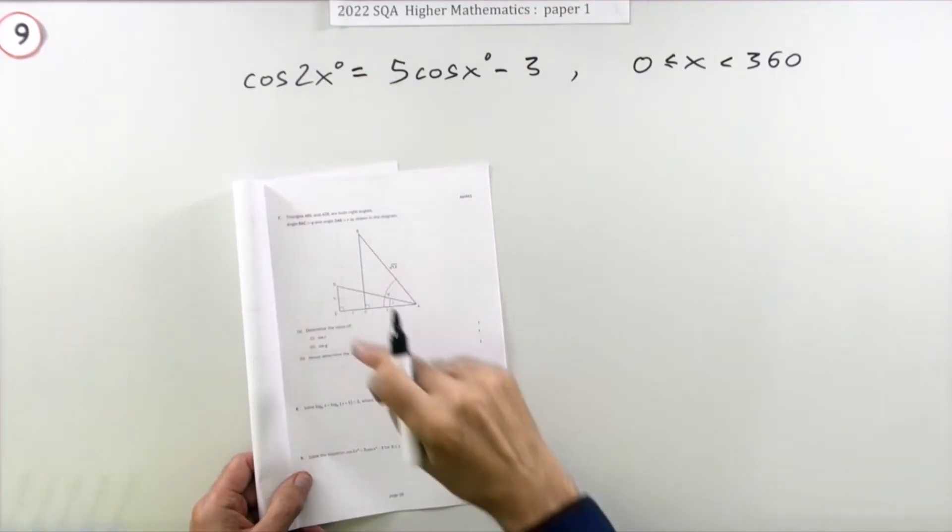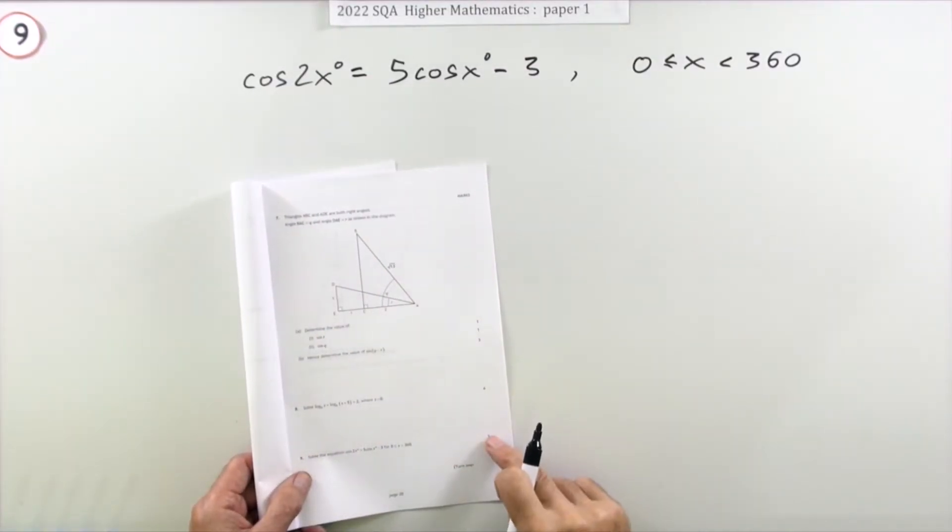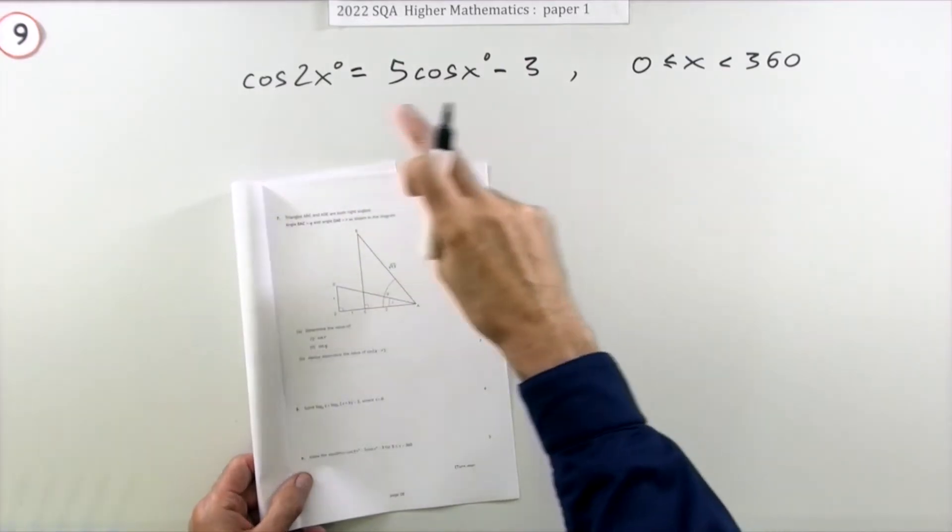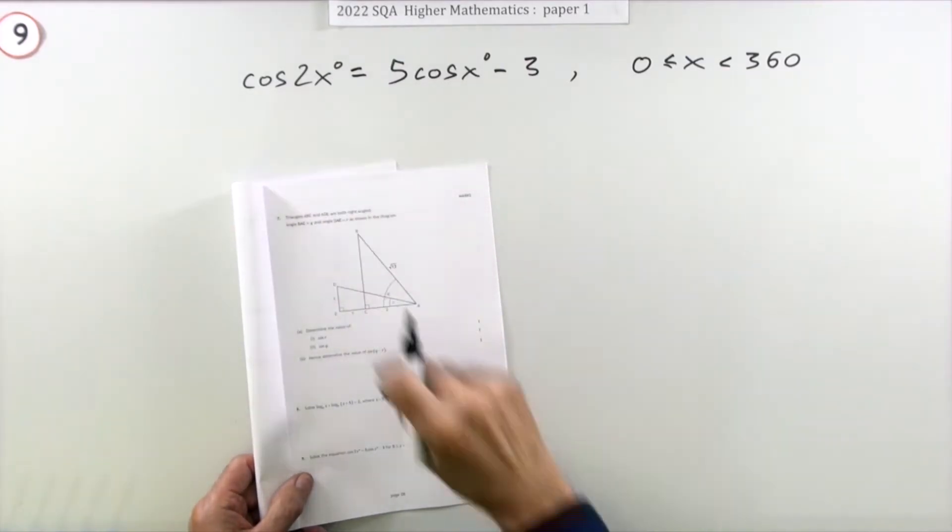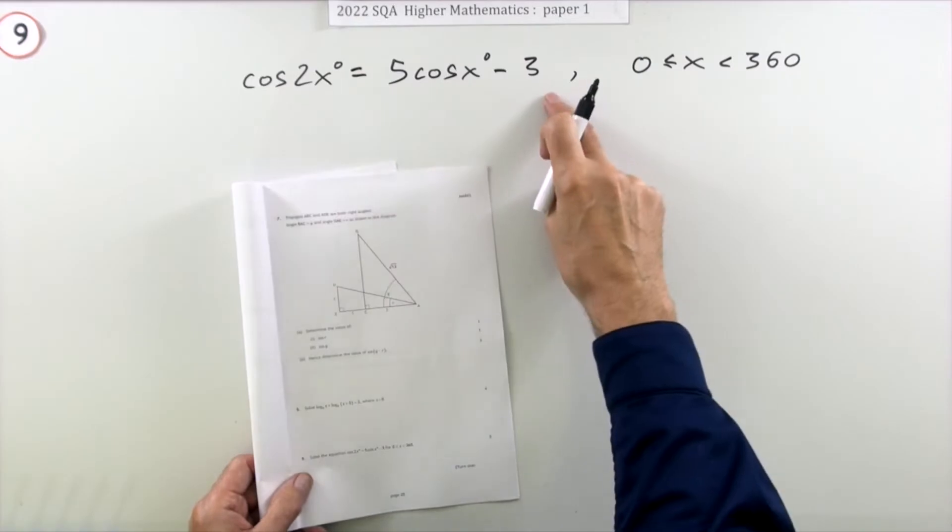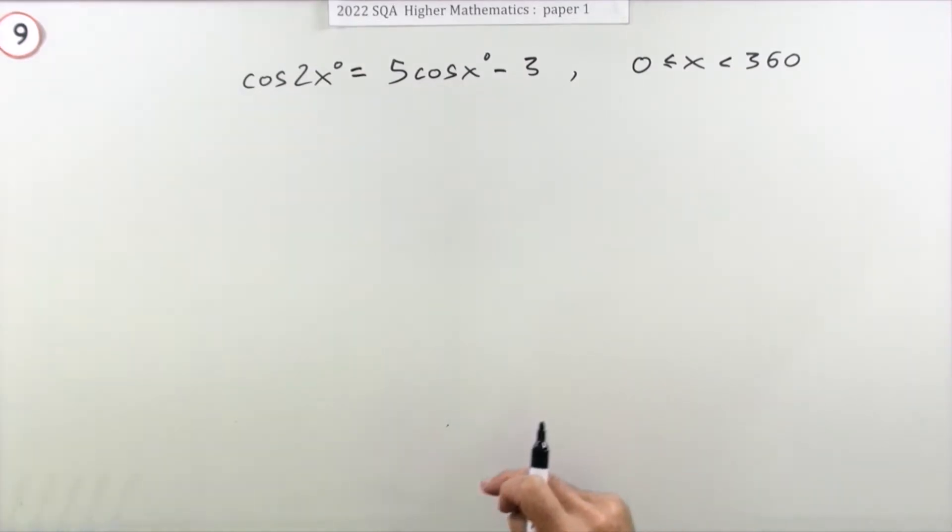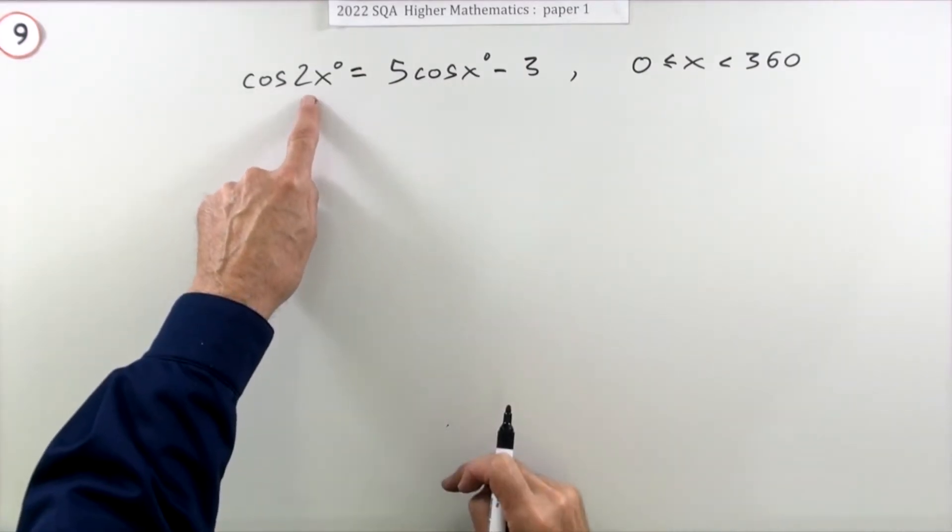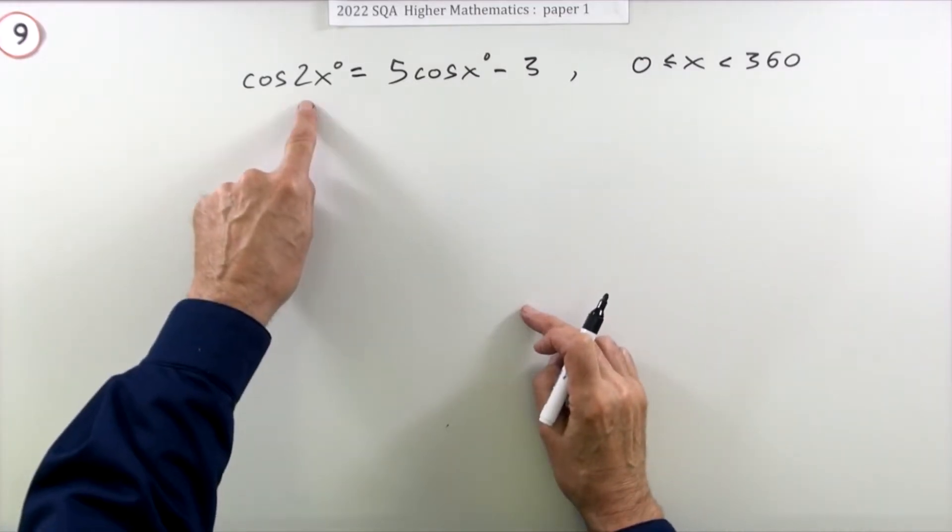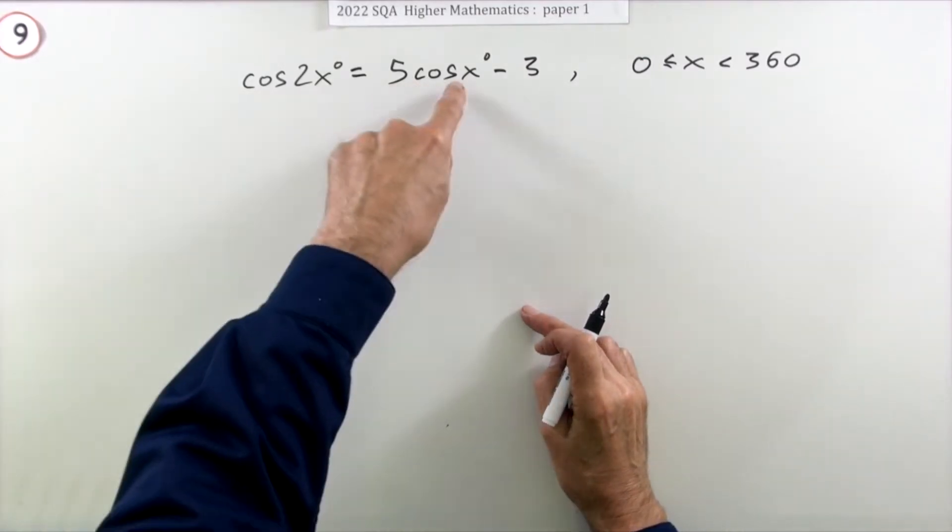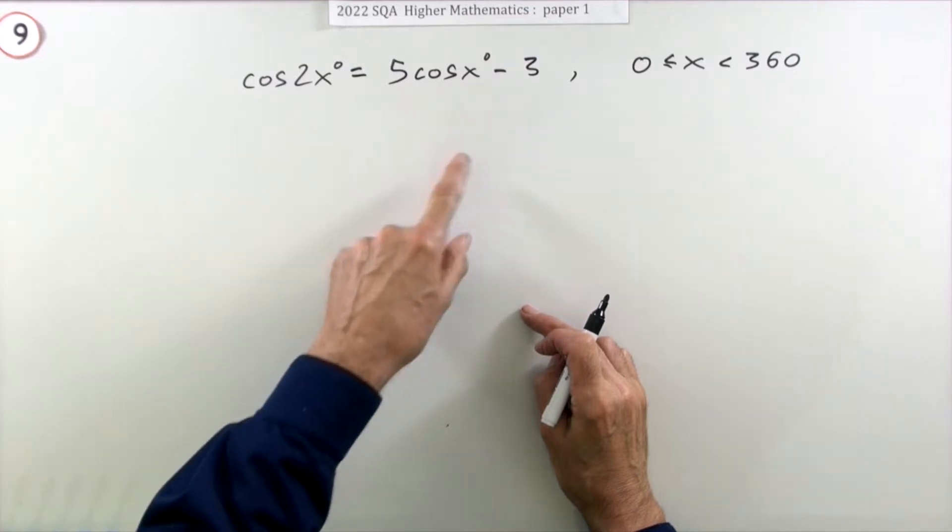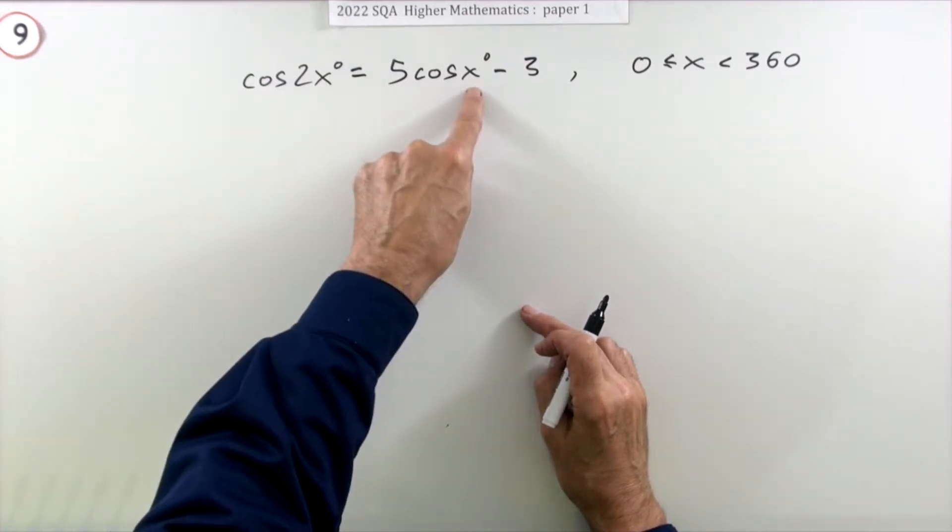Question 9 from the 2022 Higher Math Paper 1 is a five-mark question, a double angle trig equation. You know it's a double angle equation and not the wave equation because here one of the angles is double the other angle, whereas in the wave equation the two angles should be the same.